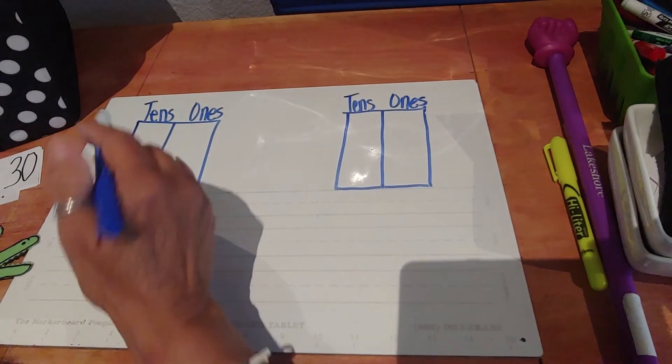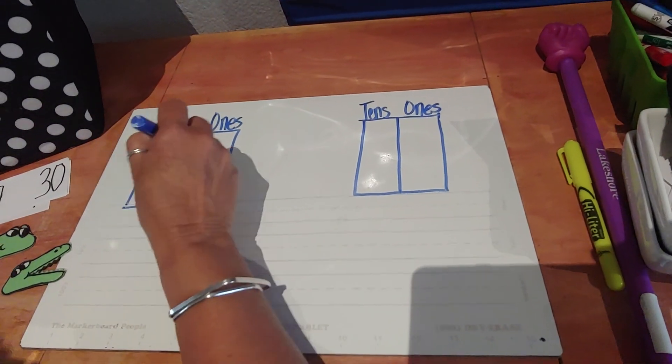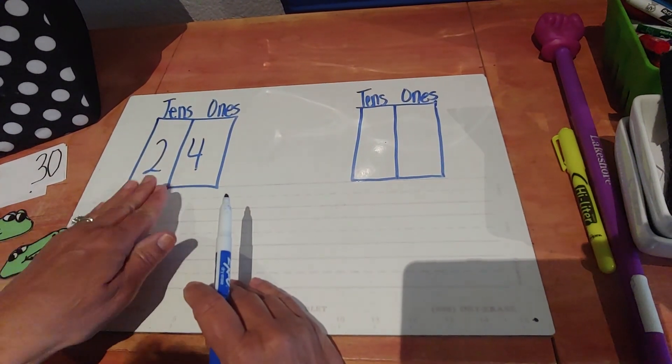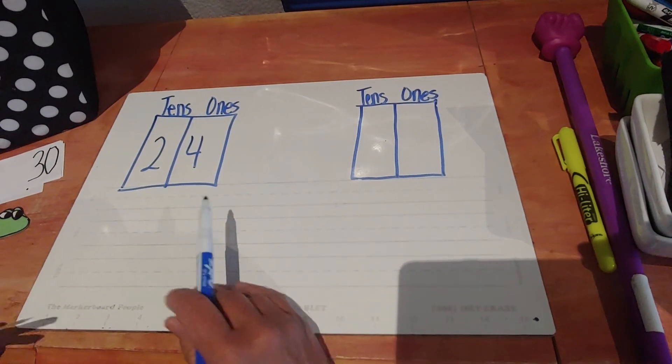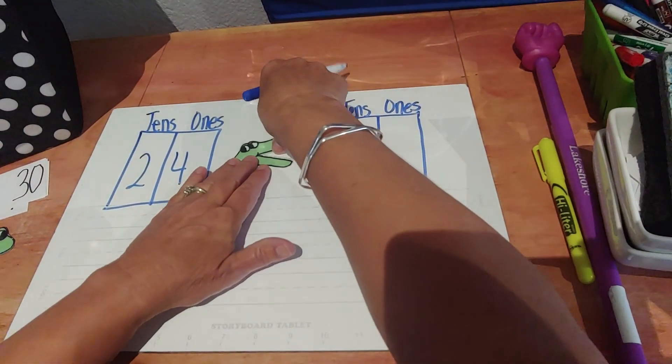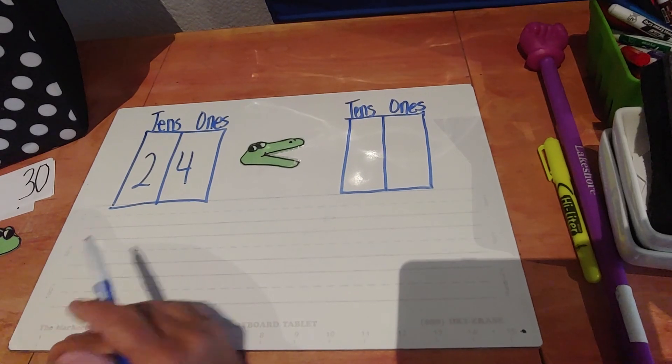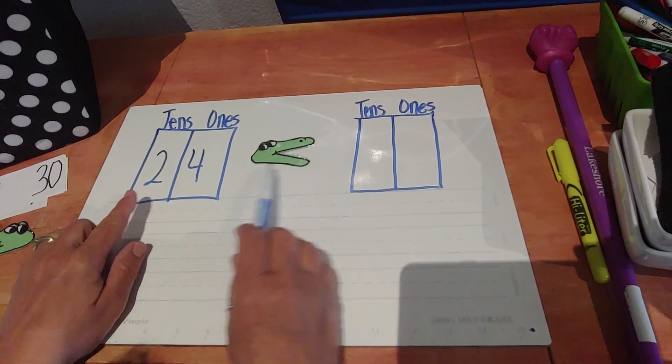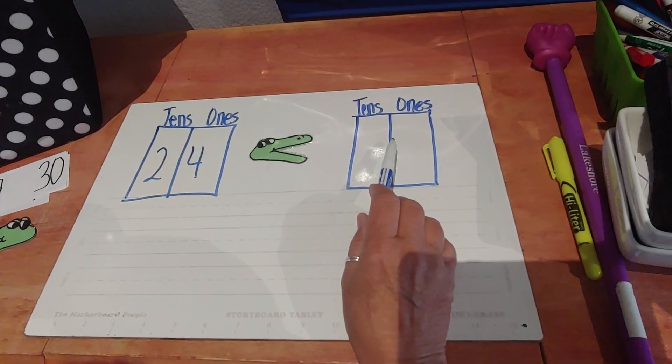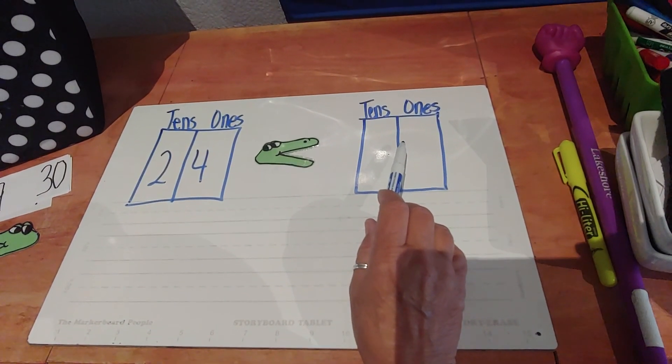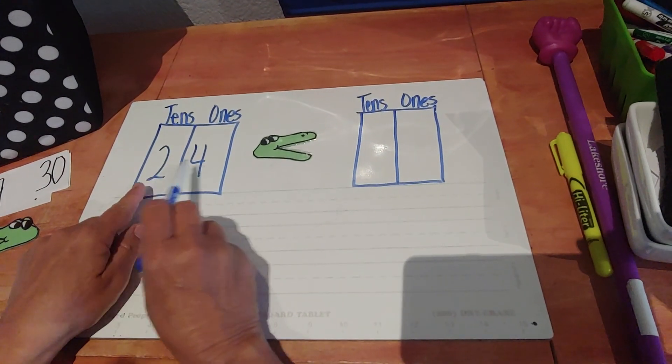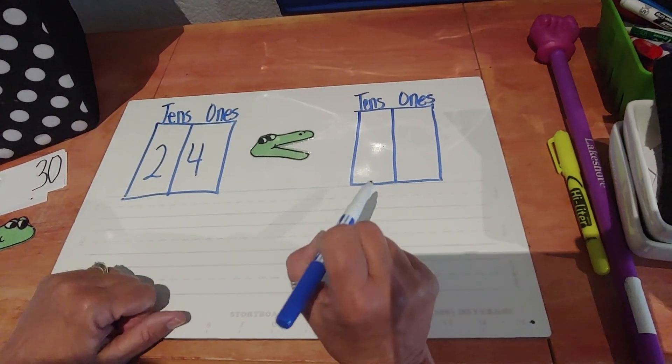the tens goes on the left and the ones goes on the right. So over in here, they'll give you a number like two in the tens and four in the ones. We know that that number says 24. And then they give you the less than, and we're calling that a less than because we start reading from this side, less than this box over here.